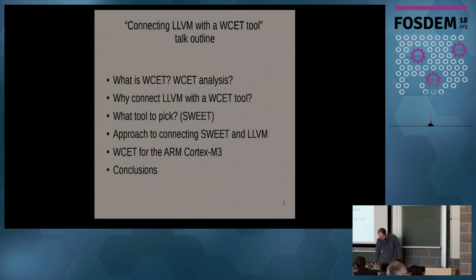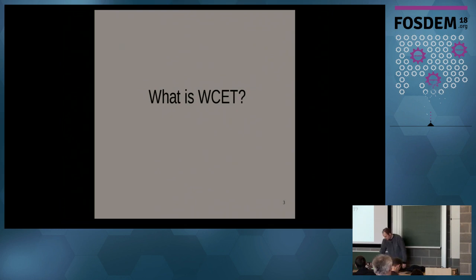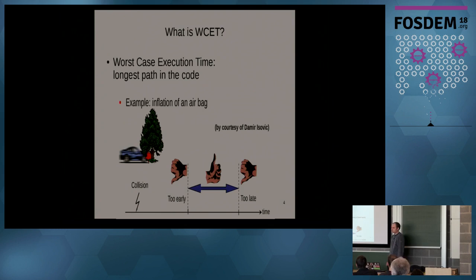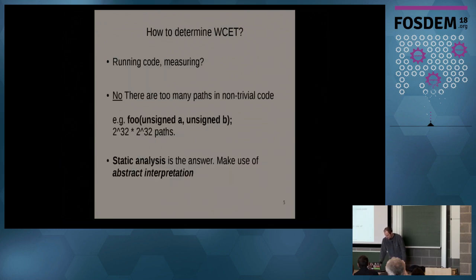Worst-case execution time is a bit of a silly concept, but imagine I ask you to design a software routine for pressing the brake on a car. By design, you need some guarantee that it will eventually finish — otherwise your brakes won't be activated and your car might crash against a tree. So the worst-case execution time is the very longest time a piece of code can take, and you might have a requirement on this by design.